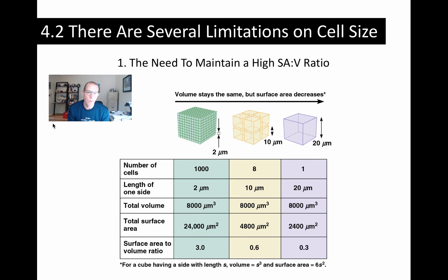And then if we subdivide that 20 micrometer cell into 8 smaller cells, and we halve the length, what we see then is that the surface area doubles relative to the one big cell, and that results in a doubling of the surface area to volume ratio.